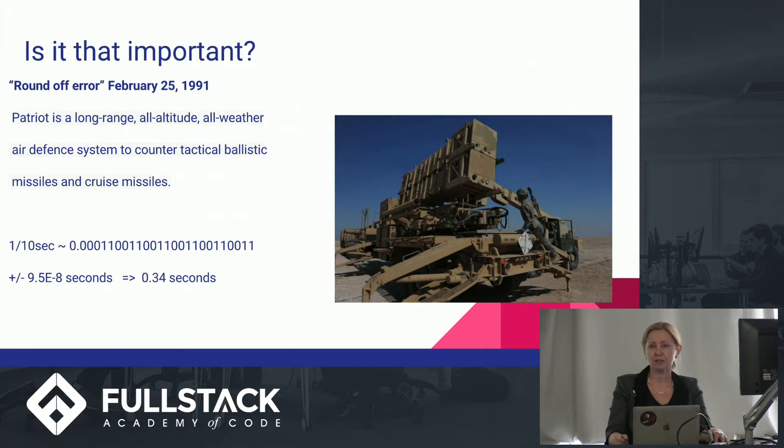Patriot calculates the area in air space where it should look for such a target. And it tracks this space every one tenth of a second, which cannot be represented precisely, so there's always a representation error. And this error should be 9.5 times 10 to the power of minus 8.